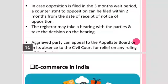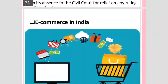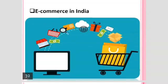An aggrieved party can appeal to the appellate board or to the civil court for relief. The registrar will determine which parties have provided proper evidence and a proper solution. According to this process, the SICLD Act concludes. In the next lecture, we will discuss topics related to e-commerce in India. Thank you.